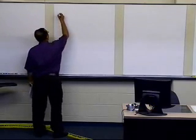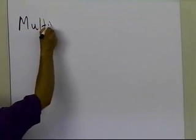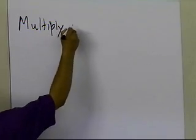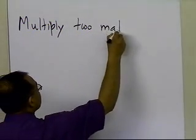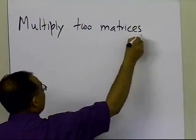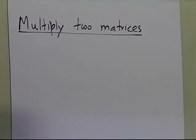In this segment, we'll talk about how we can multiply two matrices. Unlike numbers, you can multiply any two numbers, but you cannot multiply any two matrices. There are some limitations on what you can multiply so far as matrices are concerned.